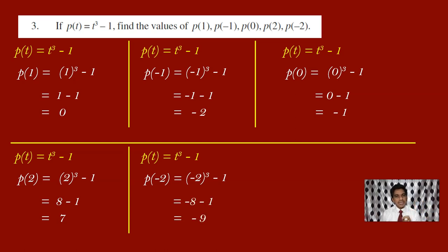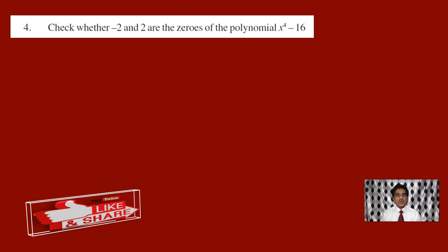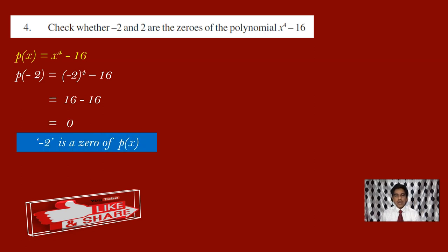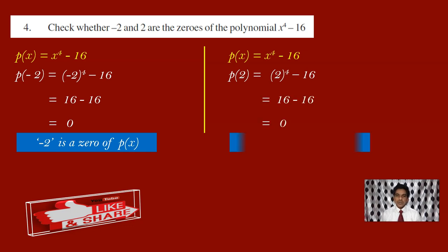Check whether minus 2 and 2 are zeros of the polynomial x power 4 minus 16. The degree of this polynomial is 4, so there are 4 zeros. Let us find p of minus 2 first. Minus 2 whole power 4 minus 16. Since the exponent 4 is even, you will have a positive value. Minus 2 into minus 2 into minus 2 into minus 2 gives 16. So 16 minus 16 equals 0, which means minus 2 is a zero of p of x. Now p of 2: 2 power 4 minus 16 is 16 minus 16 equals 0. So 2 is also a zero of p of x.